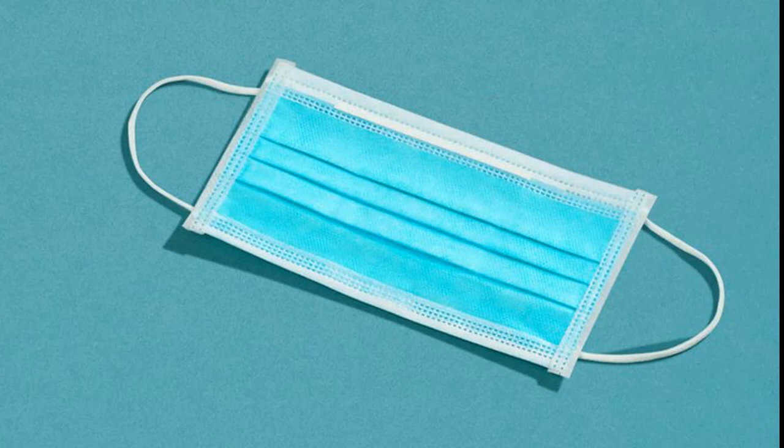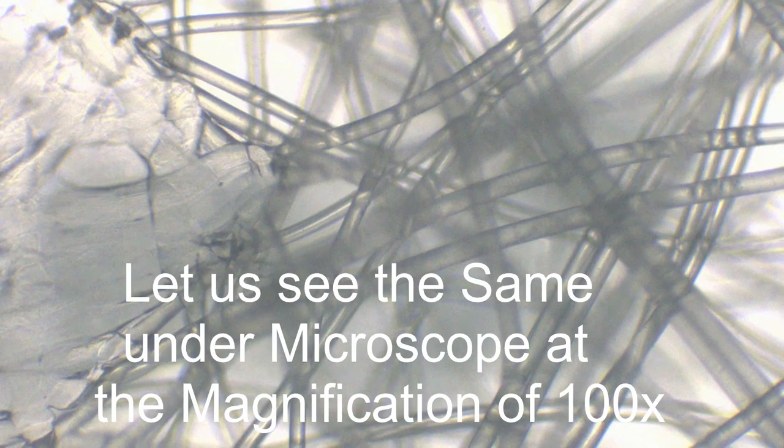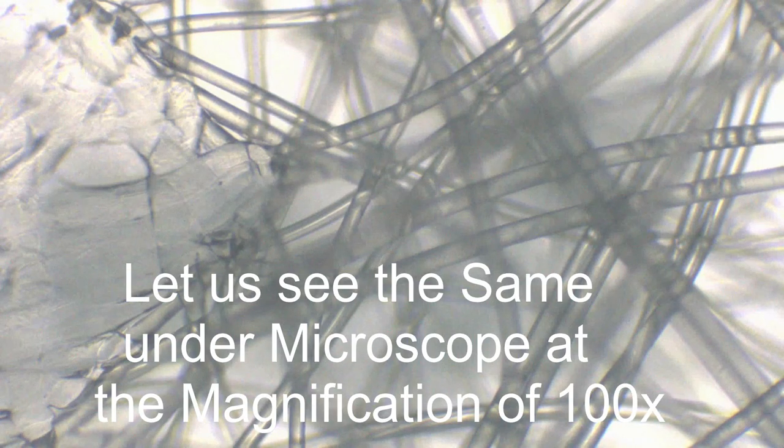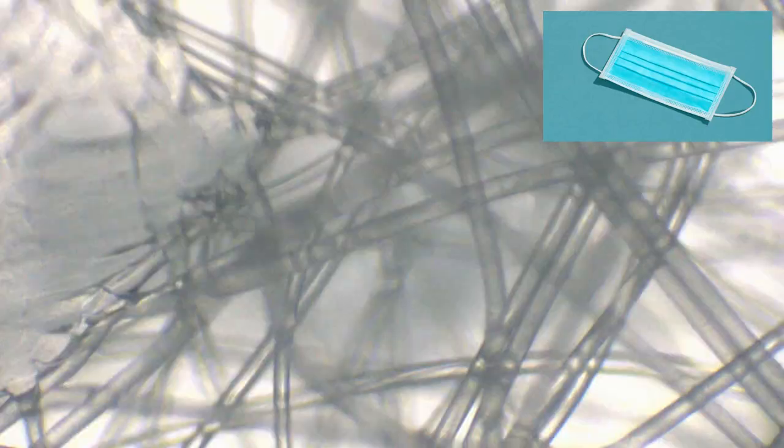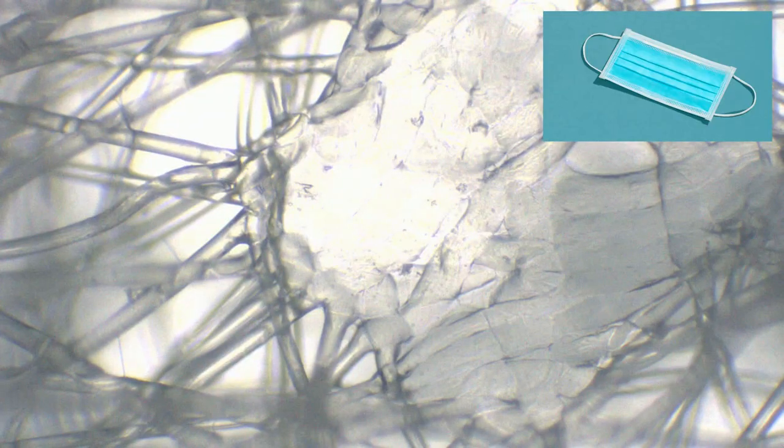Welcome to our channel Unseen World. Here we are going to show you a surgical mask under microscope. This is the outer layer of the mask under 100x magnification, and you can see this is the portion showing the fibers.